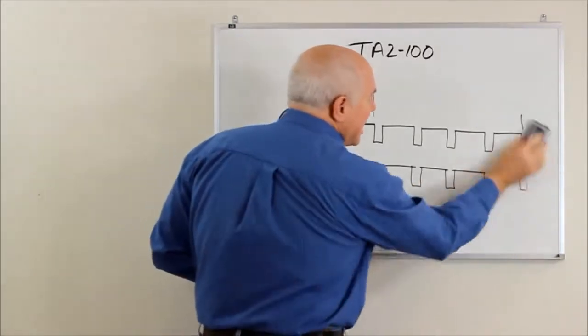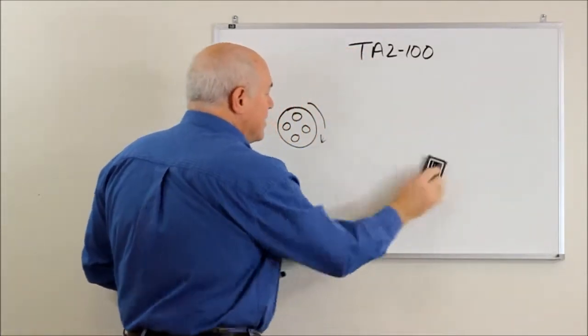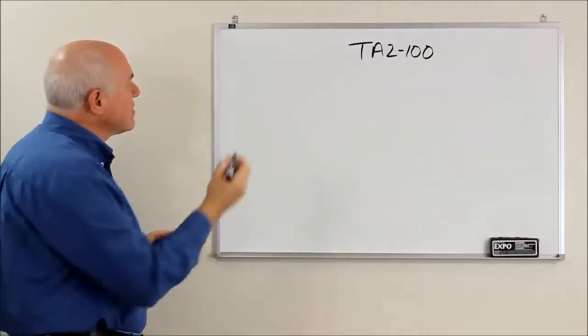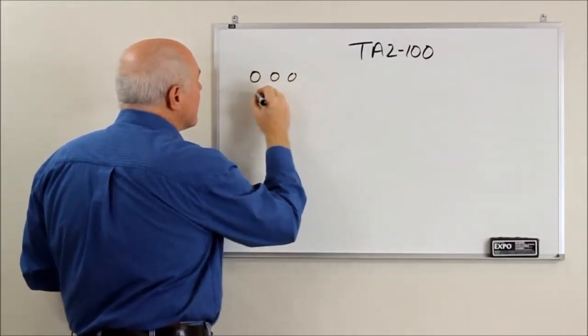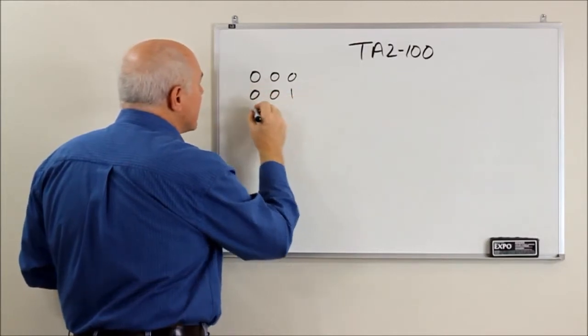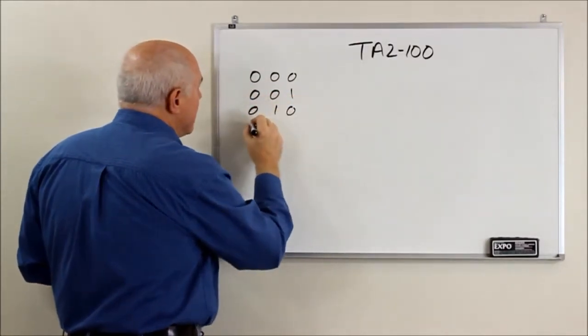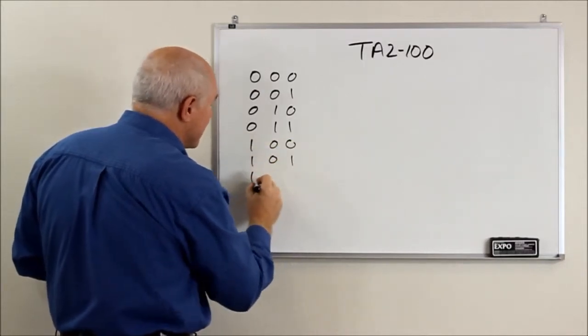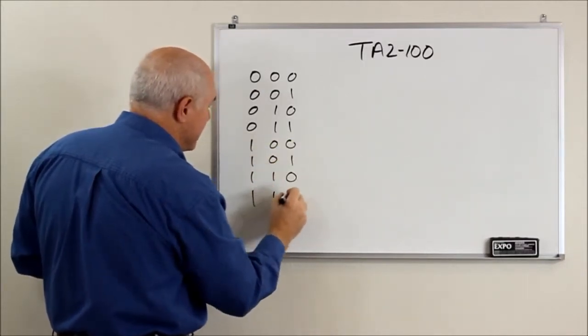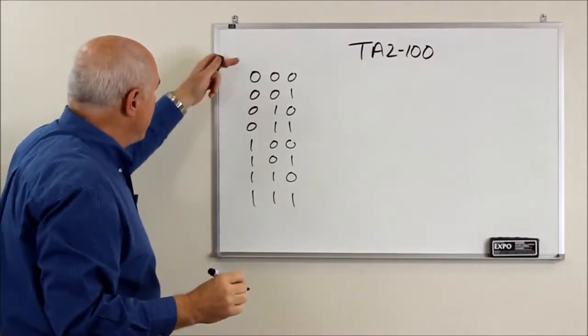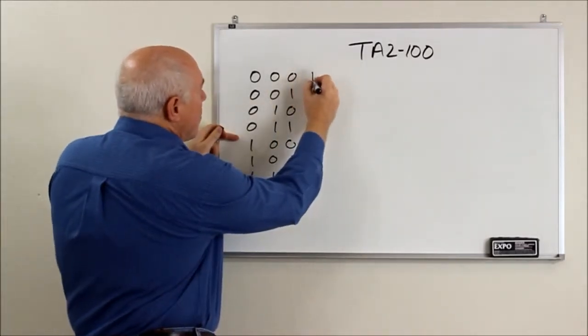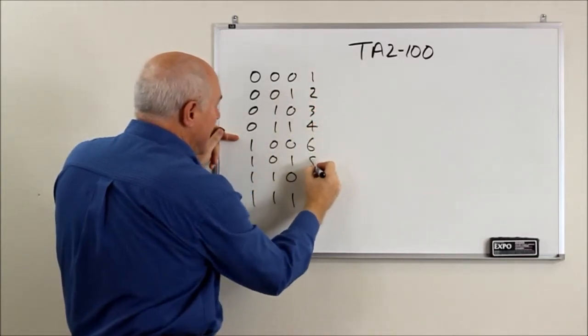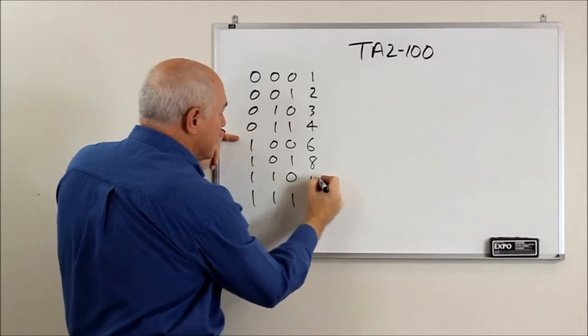Inside the device if you take the cover off you'll find some dip switches and we can use this little simple binary code here to tell us how to set these switches. If my memory serves, this is our little sequence and we have a multiply by one, two, three, four, six, eight, 10 or 12 cylinders.